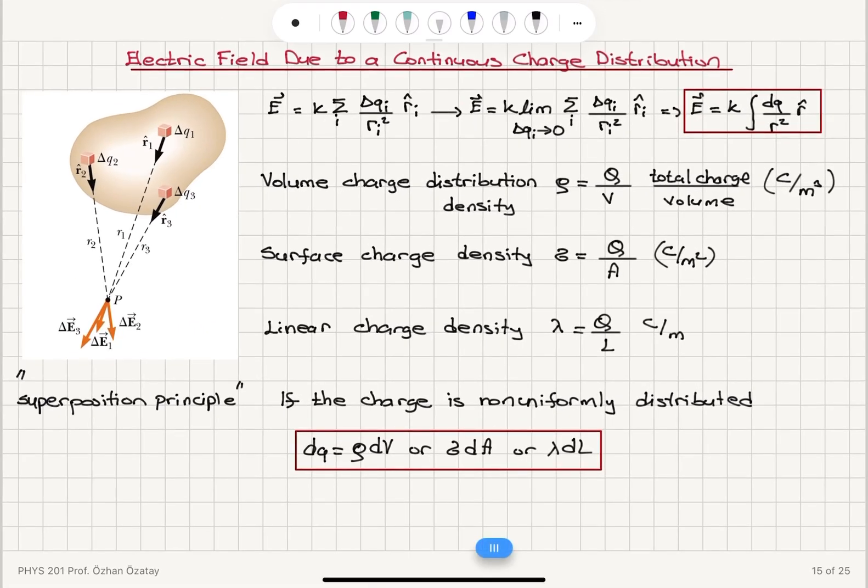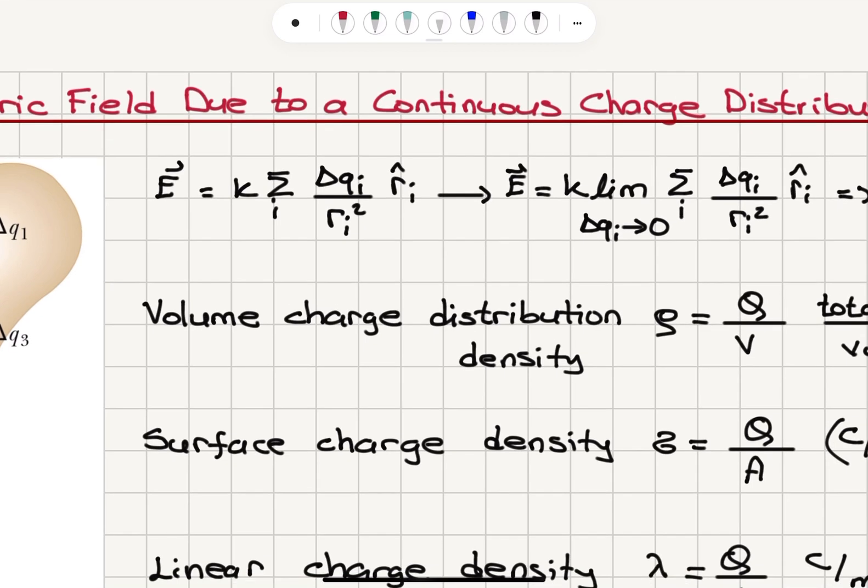So remember that for these discrete charges, we have to add up the contribution from each charge. It's K times sum over I, where I is the index for the charge, delta QI divided by RI square RI hat.